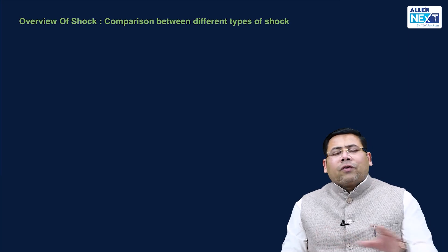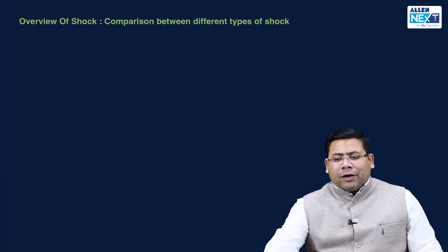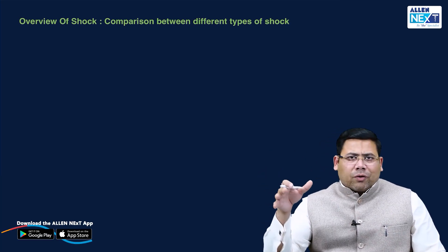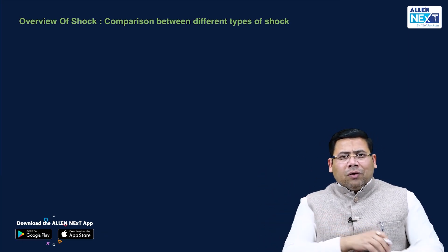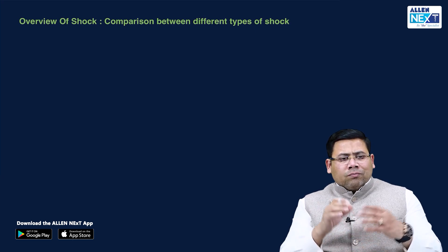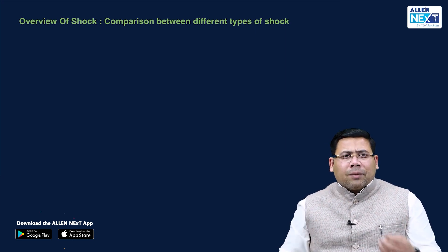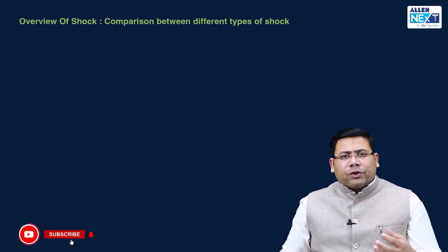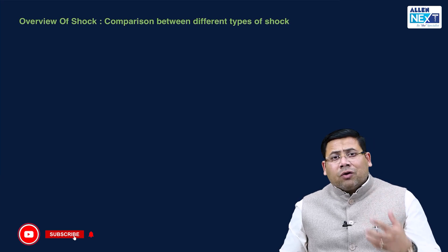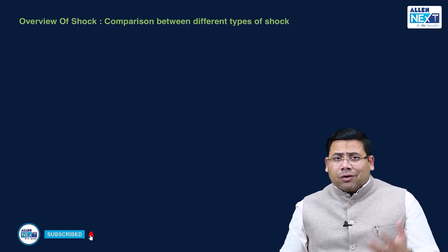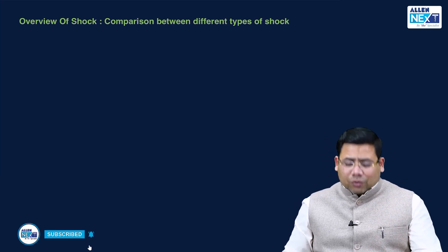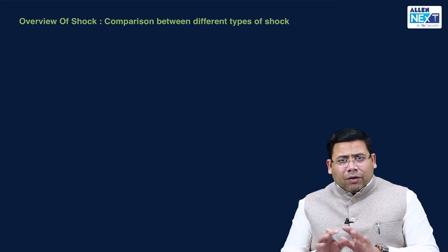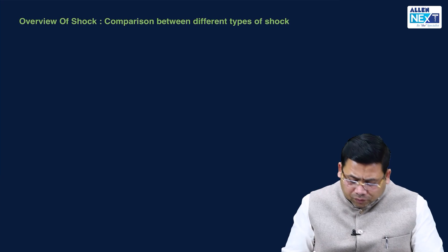Let us see an overview. We are going to compare the different types of shocks. The popular four types are hypovolemic shock, cardiogenic shock, neurogenic shock, and septic shock. We are just going to cover an overview of them.